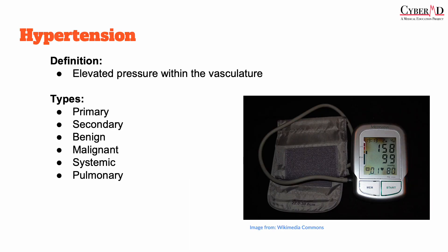Hypertension can be classified as either primary, also known as essential, or secondary. Primary hypertension accounts for 90 to 95% of all cases of hypertension and has no detectable cause, whereas secondary hypertension is caused by a specific underlying condition. Hypertension may also involve the pulmonary system or systemic circulation, but for this lecture we're going to be focusing on systemic hypertension. It can also be classified as benign or malignant, and we'll get into that later.